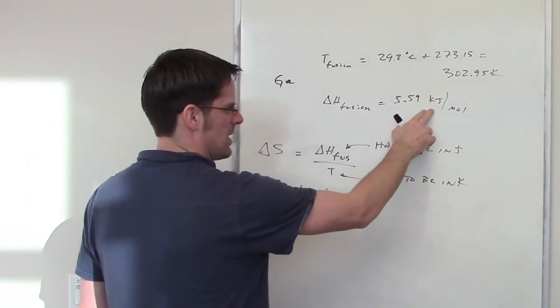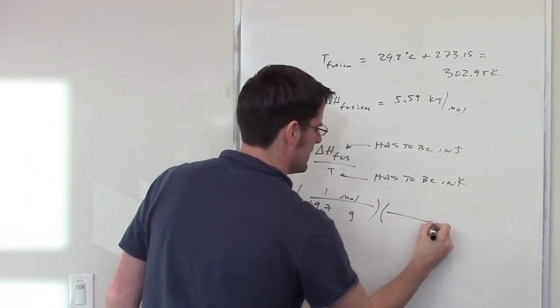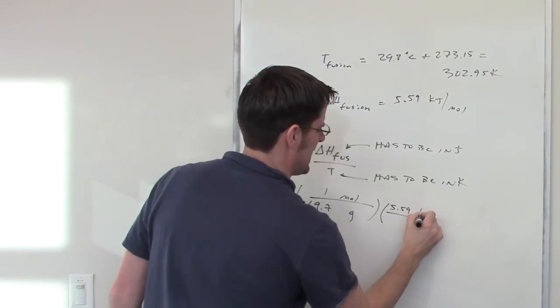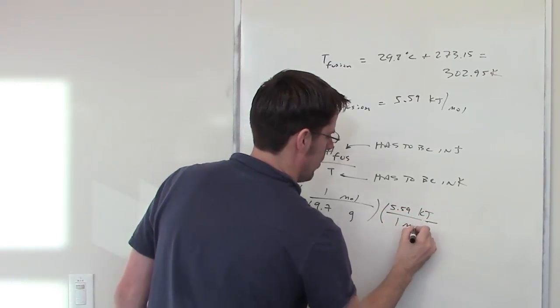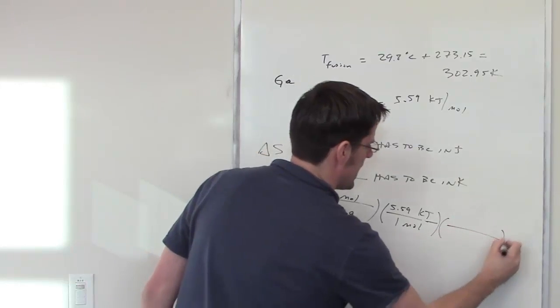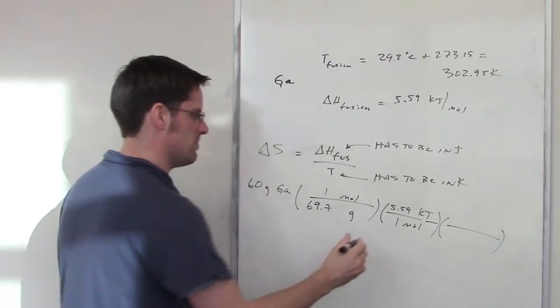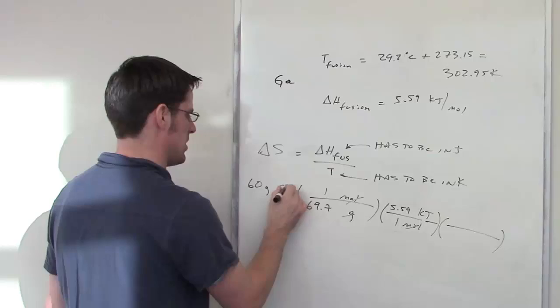I've got this number here that has kilojoules per mole, so I bet I could use that. I'll go 5.59 kilojoules in one mole for gallium. And then I want, of course, to get to joules. The moles cancel each other out, the grams cancel each other out.